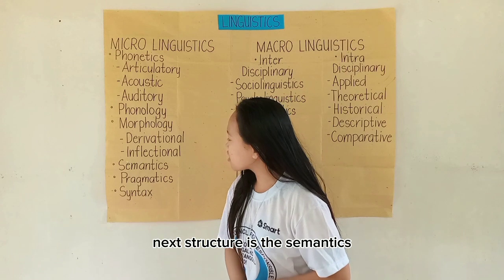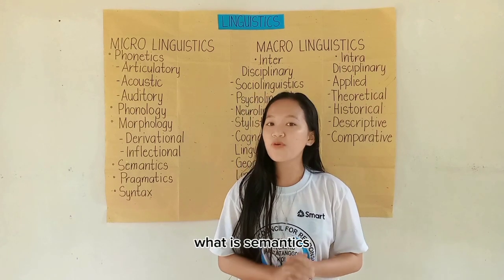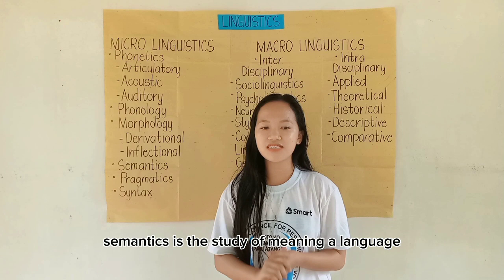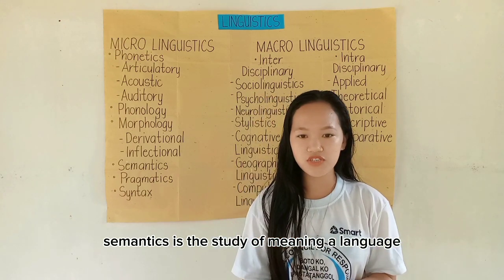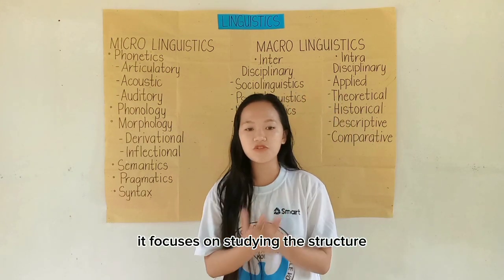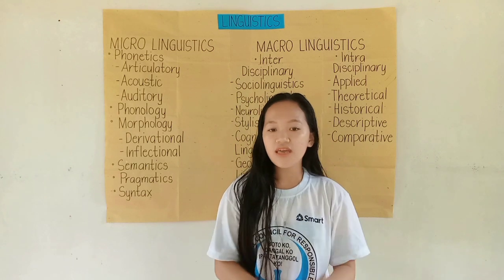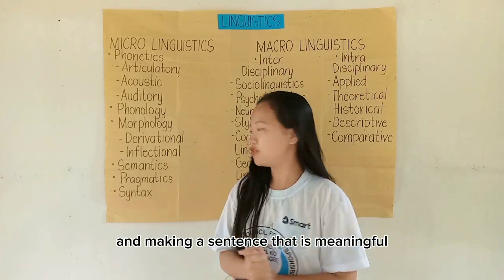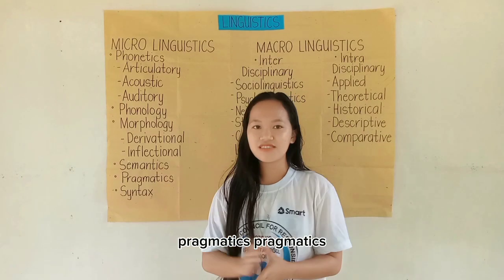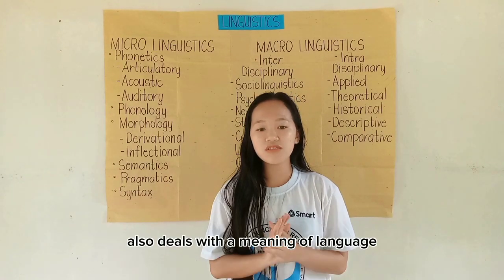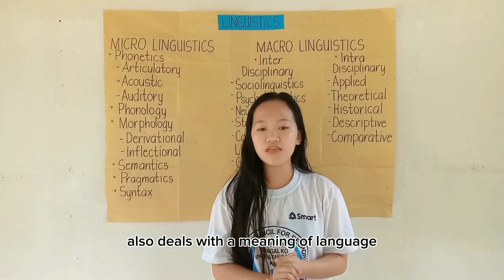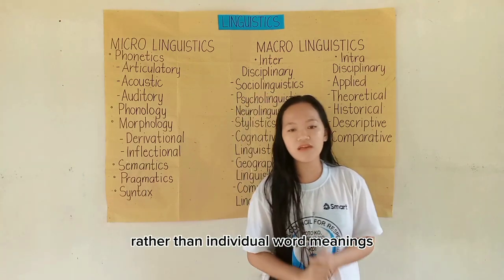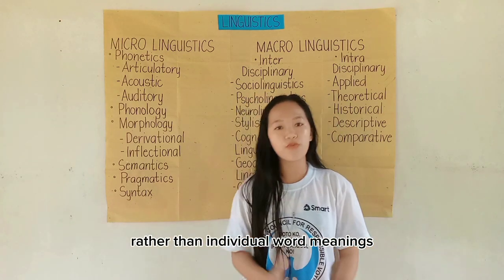The next structure is semantics. Semantics is the study of meaning in a language. It focuses on studying the structure of meaning of words and making sentences that are meaningful. Pragmatics also deals with the meaning of language, but it focuses on meaning in context rather than individual word meanings.